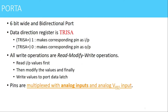The first port is port A, which is a 6-bit bidirectional IO port used to interface any external peripheral. The data direction register for port A is TRISA. Using TRISA we can make the pins of port A either input pins, output pins, or a combination of both. Putting 1 at a particular position in TRISA makes that pin an input pin, and 0 makes it an output pin. All write operations are read-modify-write operations: the value from the register is first read, then modified, and finally written back to the same register.